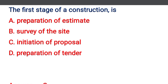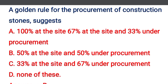Next question: the first stage of construction is — option A: preparation of estimate, option B: survey of site, option C: initiation of proposal, option D: preparation of tender. In every construction, the first stage is initiation of proposal. After proposal submission, we prepare the estimate, then preparation of tender, then survey the land.